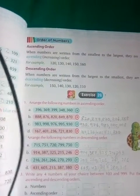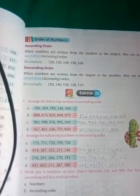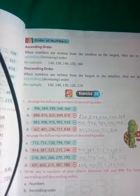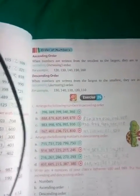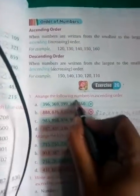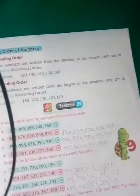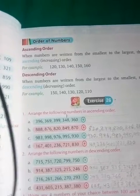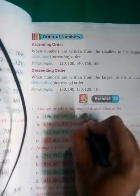Okay, so find out which one is less: 396, 369, 399, 348, 360. Which one is less? 348. Okay, so you can put here a number like this, 1. After that, which one is less among them? 360, 399, 369, 396. Which one is? 360. We will put here 2.